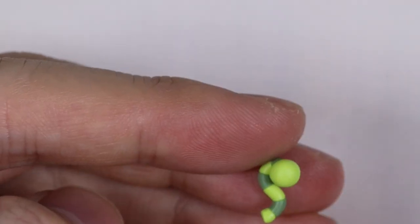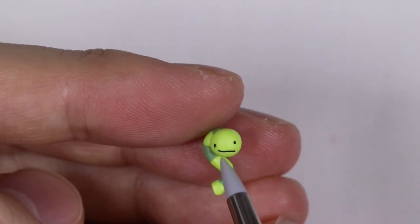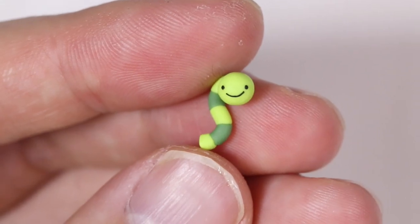And then once that's fully curved, I'm going to give the little worm some dot eyes and a line smile. And then let that bake in the oven as well. And here is the worm completely baked.